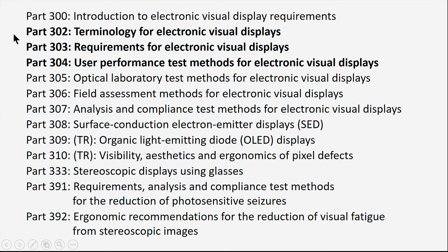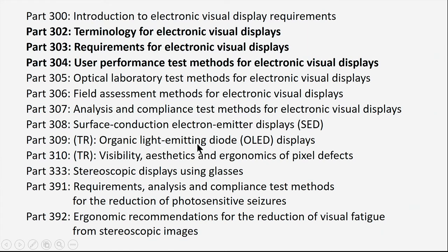Here's the 300 series, which primarily has to do with visual displays. I've highlighted three documents that I believe are the most important within this series: a terminology document, some design requirements, and test methods. Other documents in this series are noteworthy but focused on very specific topics — for example, 309 covers OLED displays, and another covers requirements for reducing photosensitive seizures. These aren't unimportant, just very focused.